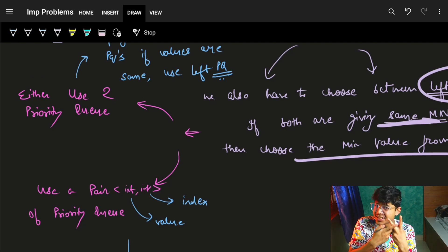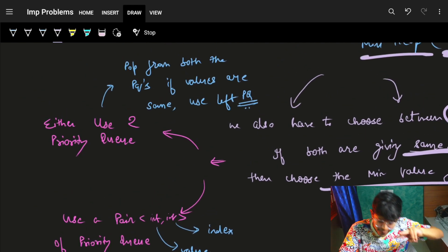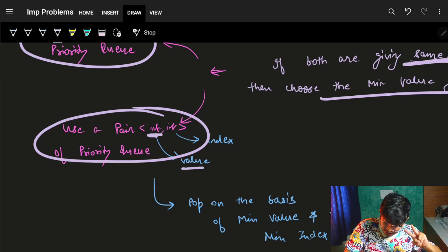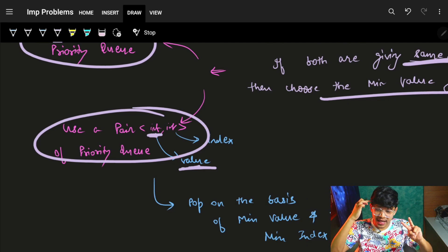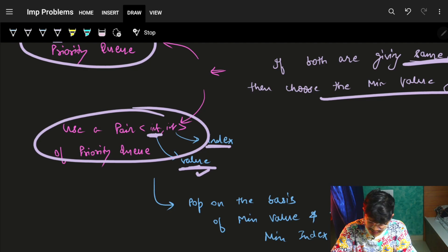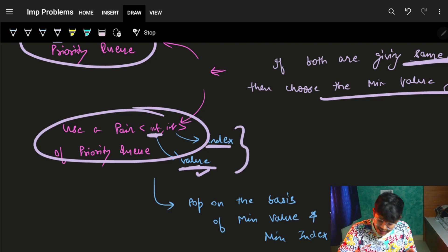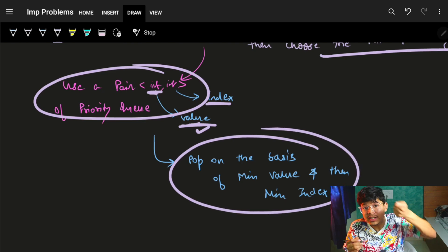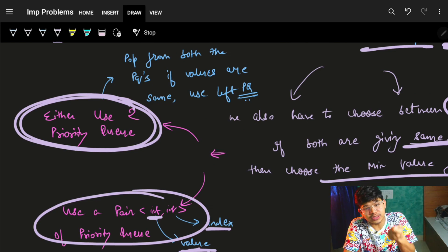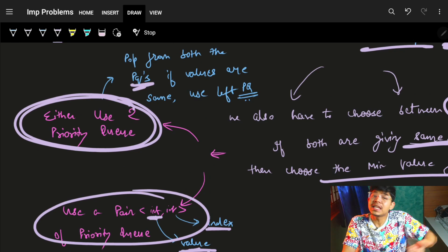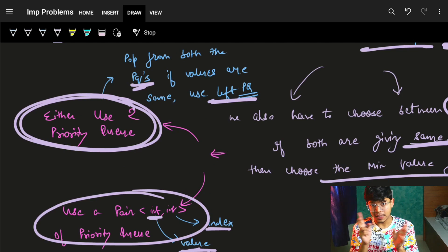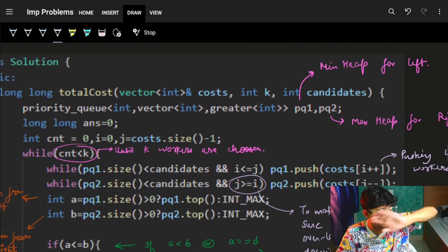We have to choose between left and right. If left and right have the same value, I choose from the left. So either I can have two priority queues — one for left and one for right — or I can use a pair in a single priority queue where the first value stores the cost (for minimum value ordering) and the second stores the index (for tie-breaking by leftmost index). Either approach works, but I'll go with two separate priority queues: left and right, and if values are the same, choose from the left priority queue.